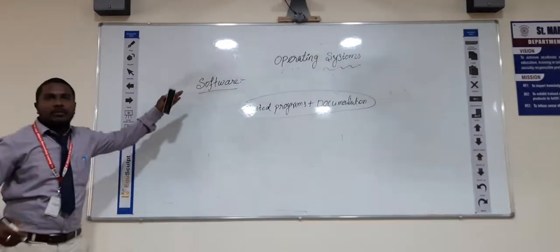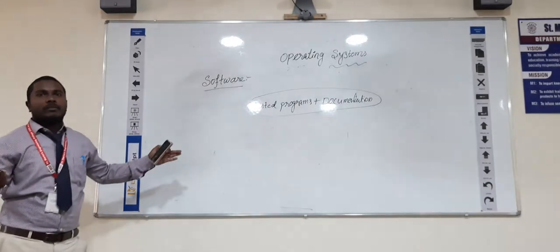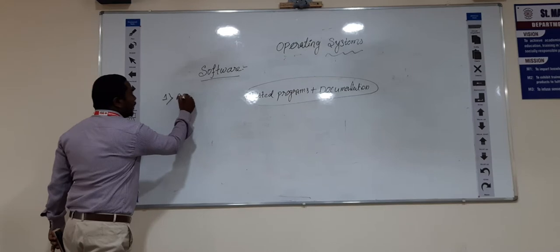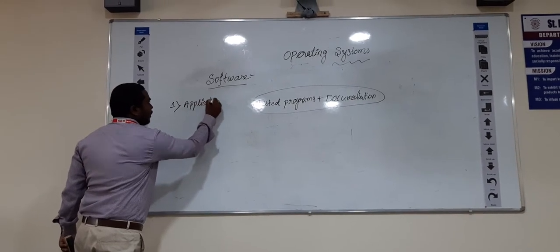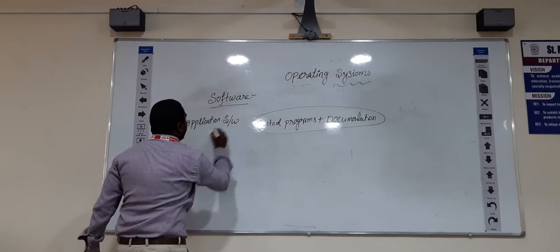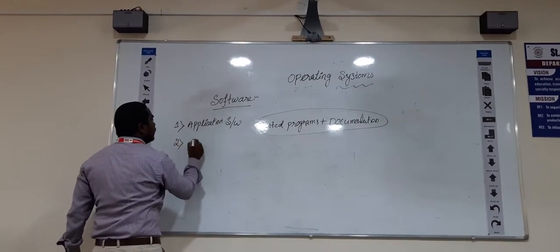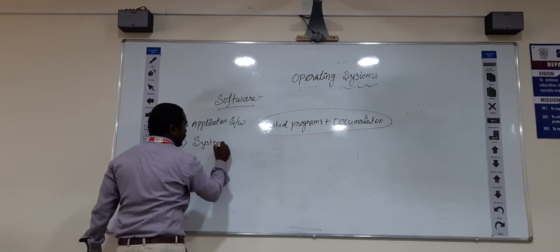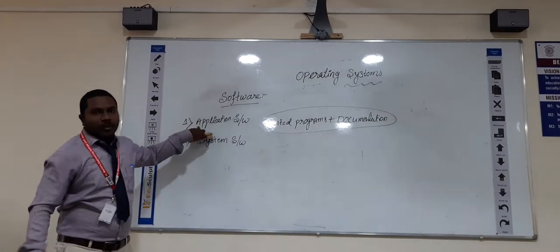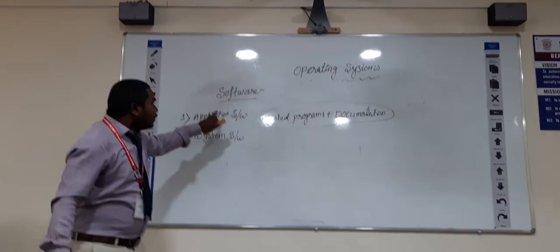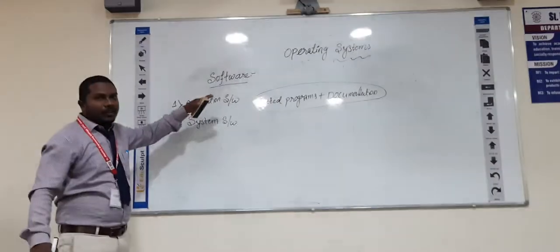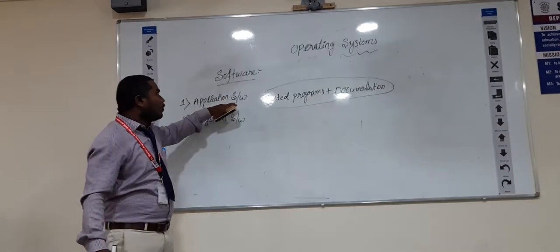How many types of software are there? We have two different types of software. One is application software and the second one is system software. Application software is designed for only a specific task.